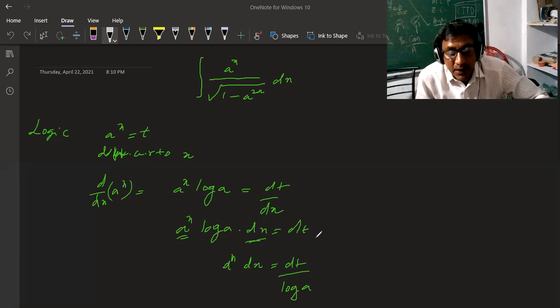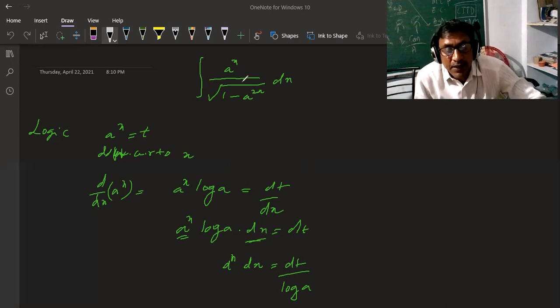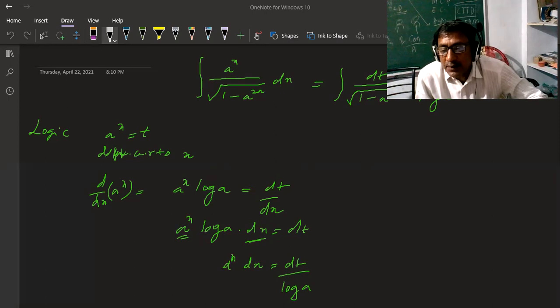This is very very important. This log A, so 1 by log A separate the result. So integration becomes a power x dx, which is dt by log A, under root over 1 minus a power 2x squared.